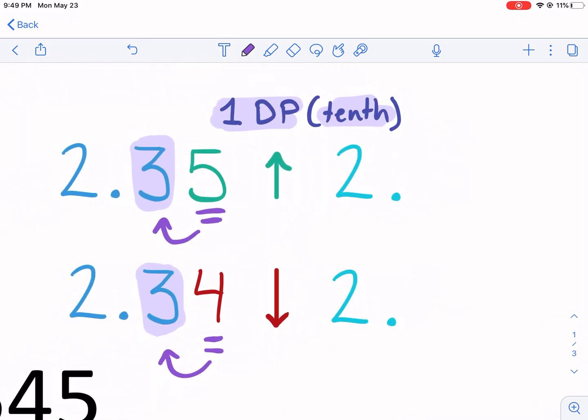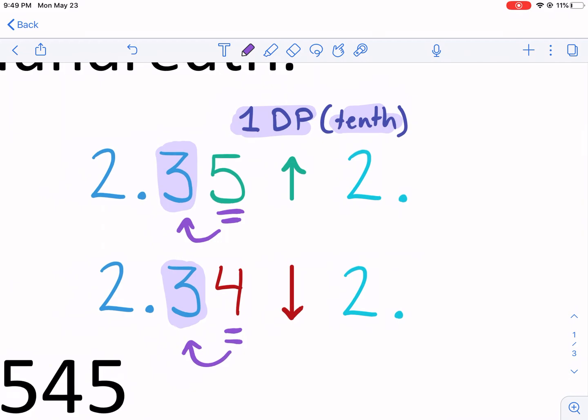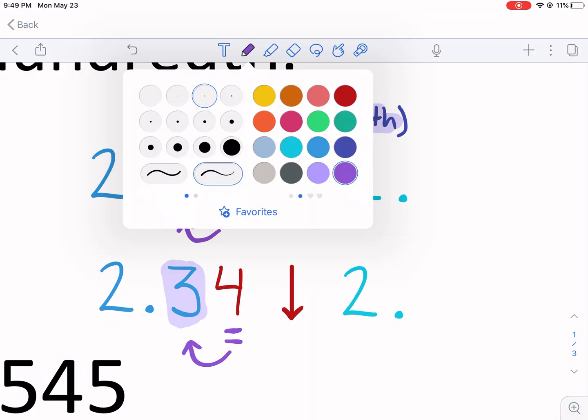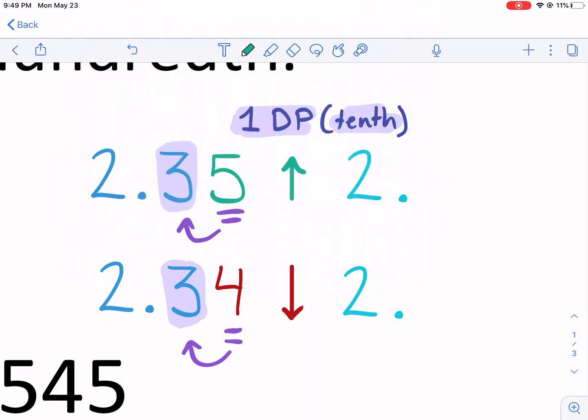Sometimes cringy helps you remember it, though. So we have 2.35. The number to the right tells you what to do. If it's a five and above, I've heard it said you give it a shove. Kind of corny, but you give it a shove because it's five and above. So it's going to be 2.4 is going to be the number there. The five tells the three to go up, to round up. So this is when you round up. So five and above, you give it a shove, make it round up.